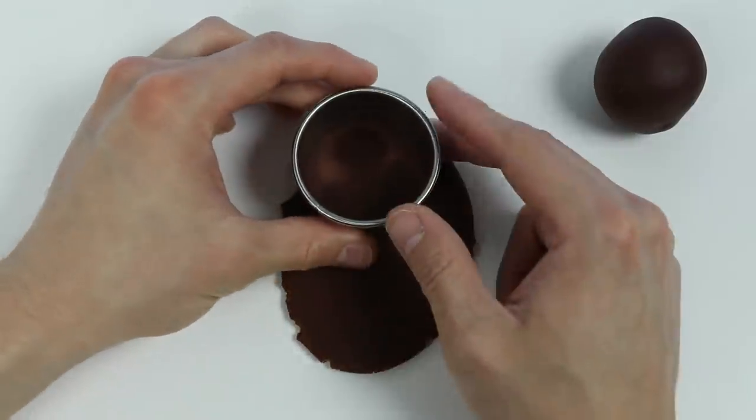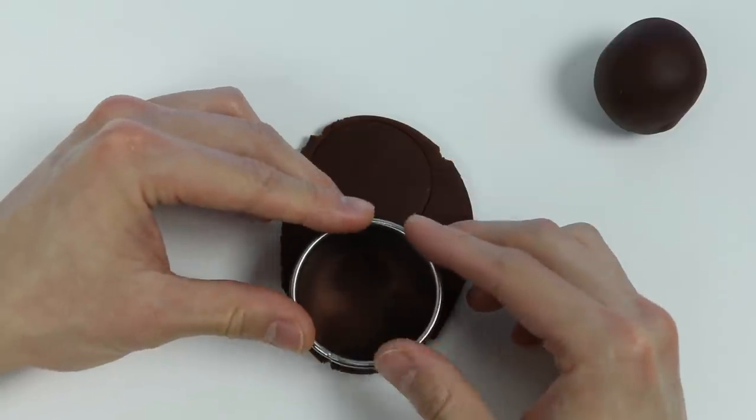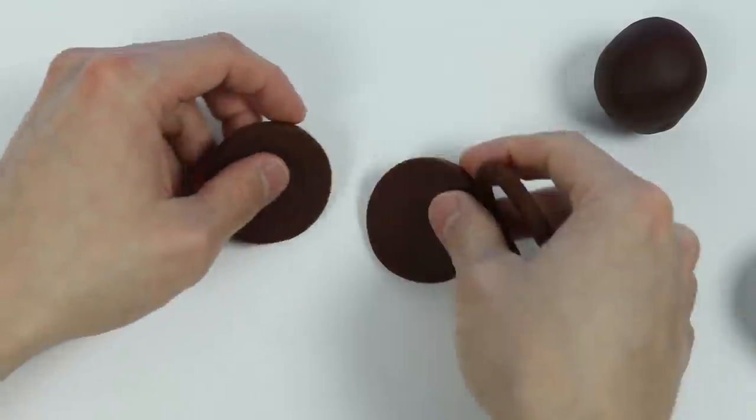Now let's use this circle cutter. Awesome, we just made two chocolate layers.